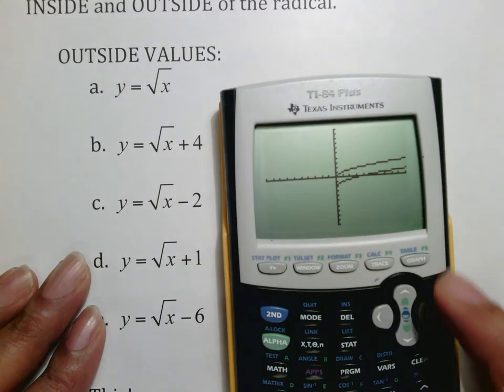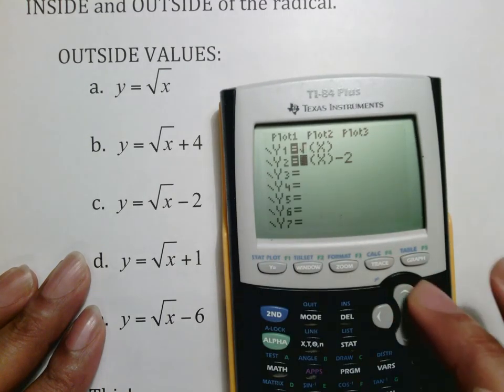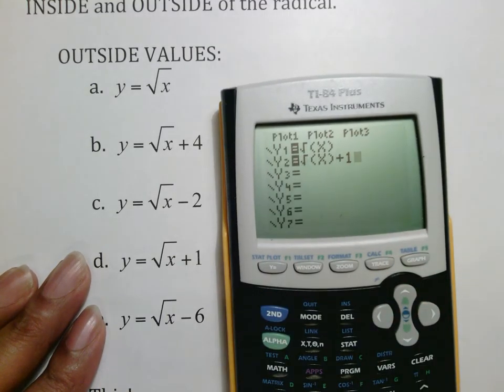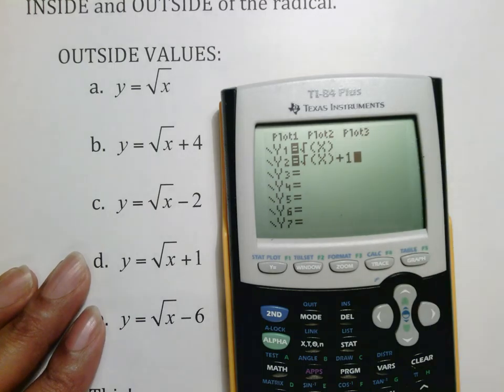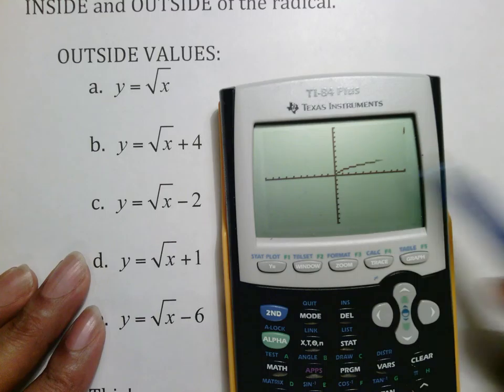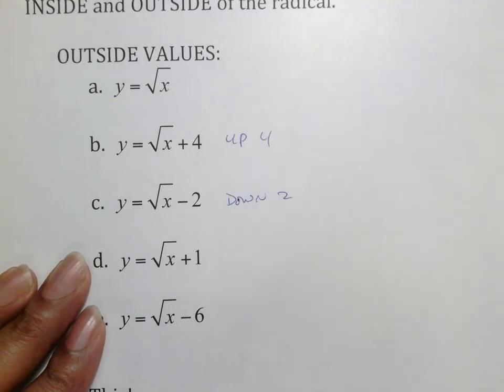Looking at the third one, square root of x plus one, make your guess. I believe that since the plus moved up and the negative moved down, this should be up one. If we're right, let's see. There's your original and there's your second. Notice it went up one.